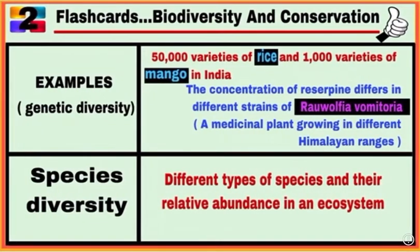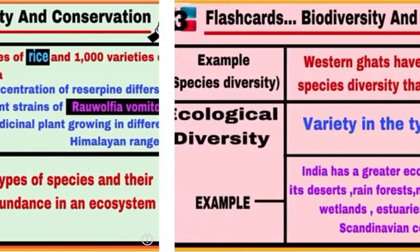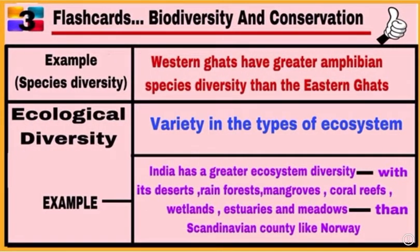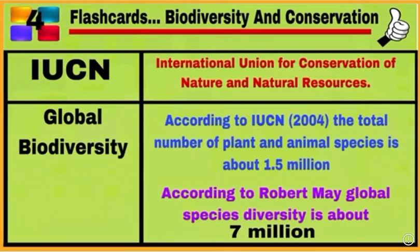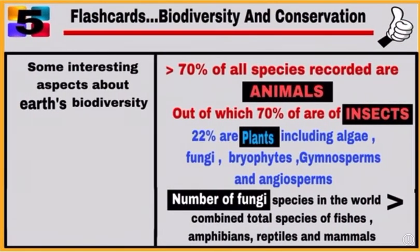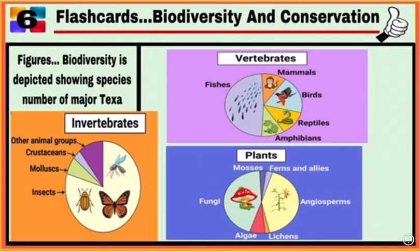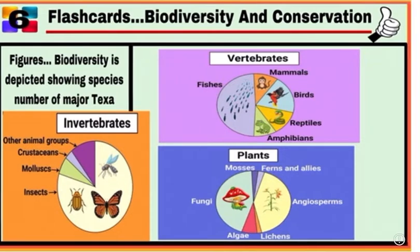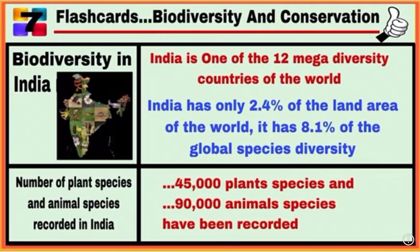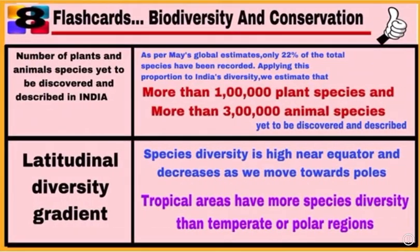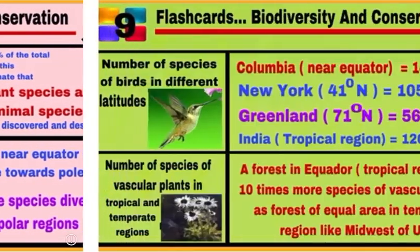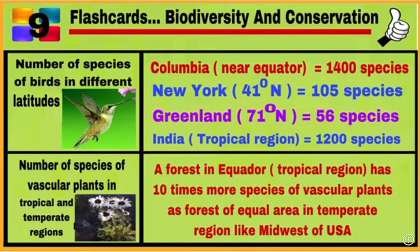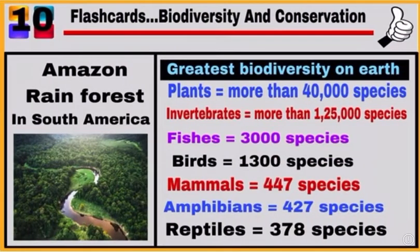Card 2, Card 3, Card 4 — Global Biodiversity. Cards 5, 6, 7 — Biodiversity in India. Cards 8, 9, 10 — Know about Biodiversity in the Amazon Rainforest.